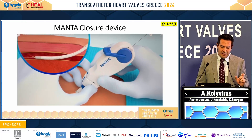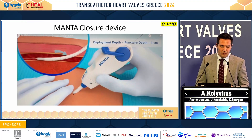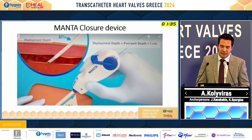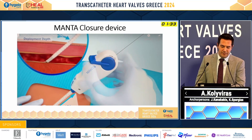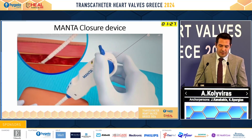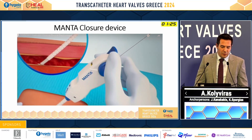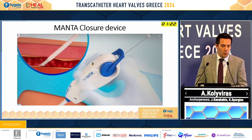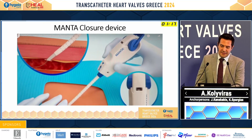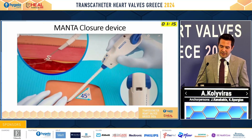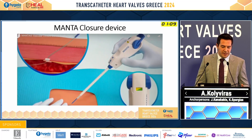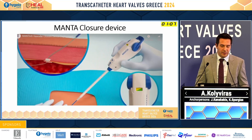We listen for the first click and pull back the whole device. We have calculated the deployment depth at the beginning, and we rotate the blue lever — in this way we release the anchor inside the vessel. We pull back. There is a green-and-yellow indicator, and pulling back the closure device, we release the collagen. In this way the arteriotomy is closed.